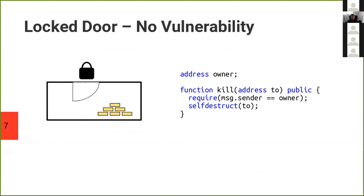Since anybody can propose transactions, programmers have now learned how to use custom modifiers correctly — these are guards to limit the execution of parts of the smart contract. People have started locking some of their important doors. For instance, here on the right-hand side, we are checking that the caller — message.sender — is indeed the owner of the smart contract. Unless you have the private key corresponding to the public key stored in the owner, you cannot call kill. So this code is not vulnerable.